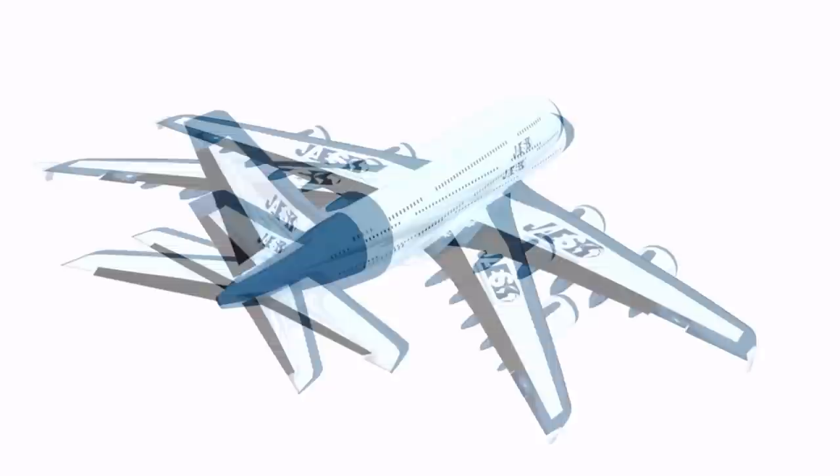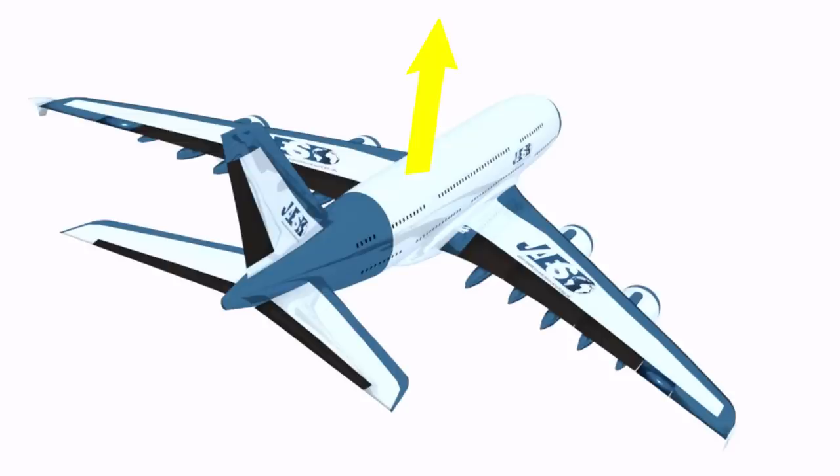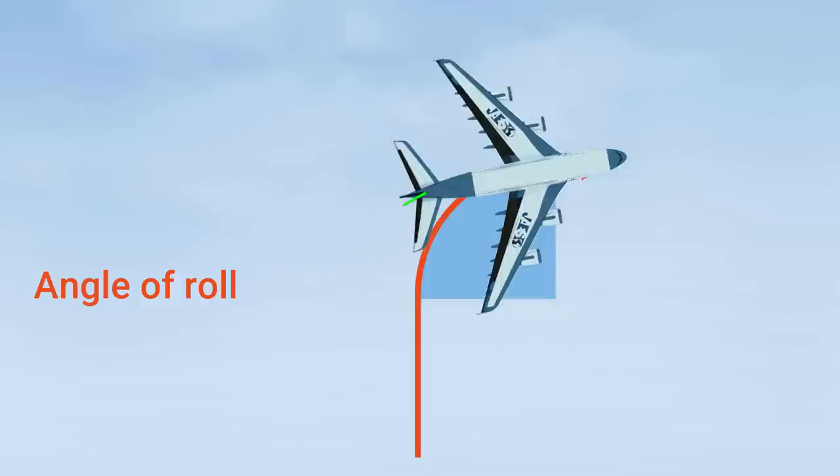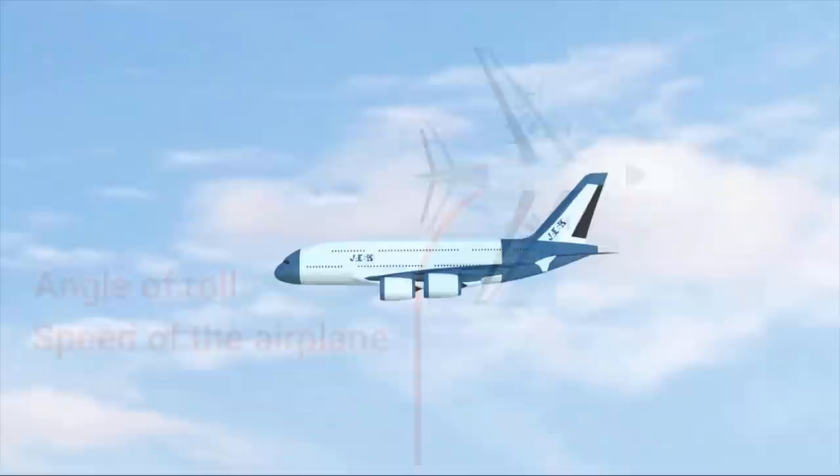During this turn, the lift force is not vertical. The horizontal component of the lift can provide the required centrifugal force to bank the airplane. In this way, the pilot can achieve a turn of any radius depending upon the angle of roll and the speed of the airplane.